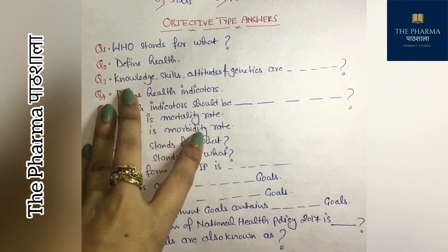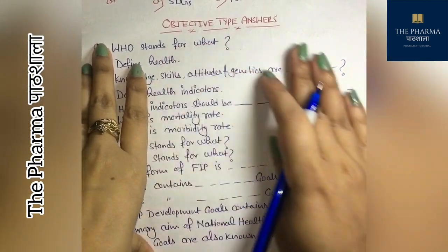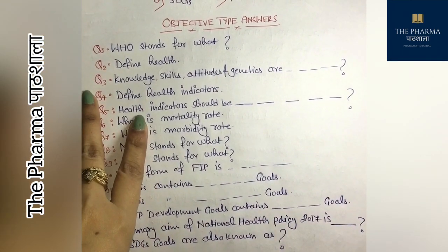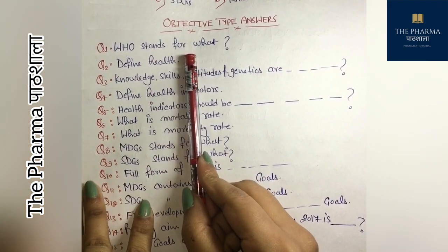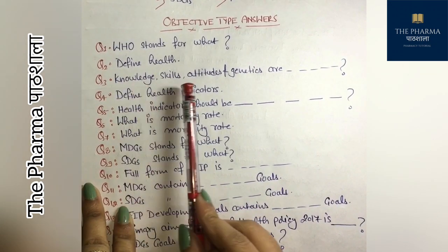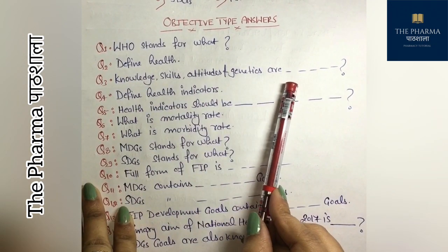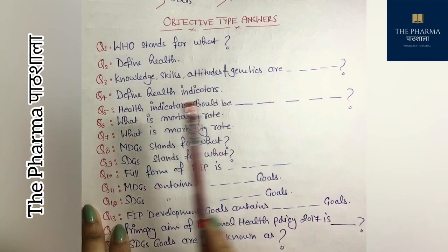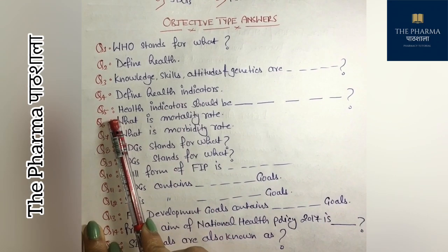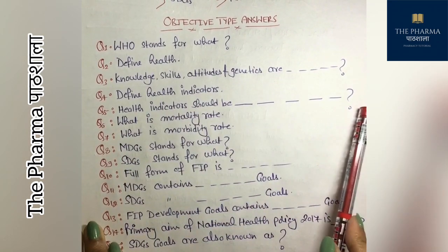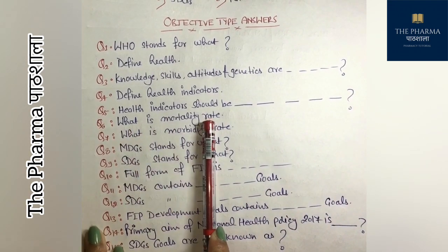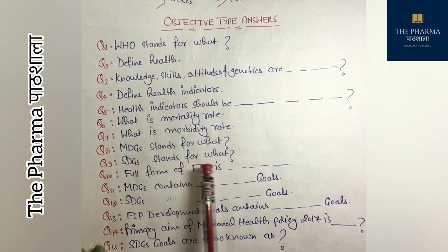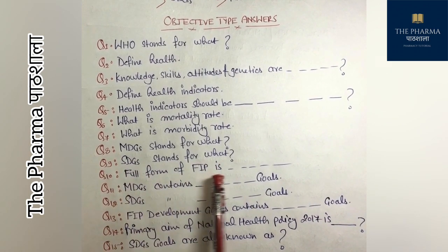So students, now let's discuss short answers and objective type answers from chapter 1. From 1-mark questions: the third question is — WHO stands for what? Define health. The third question covers knowledge, skills, attitudes, and genetics — this will be fill in the blanks. Question 4: define health indicators. Question 5: health indicators — fill in the blanks. Question 6: what is the mortality rate? Question 7: what is the morbidity rate? Question 8: MDGs stands for what?